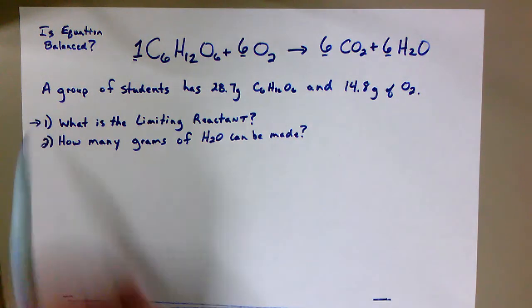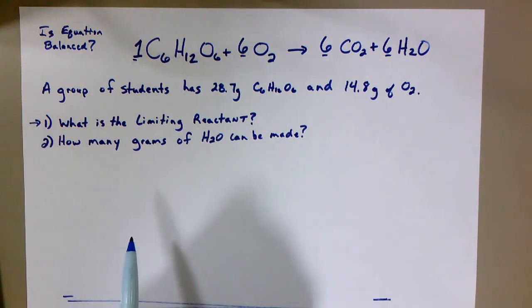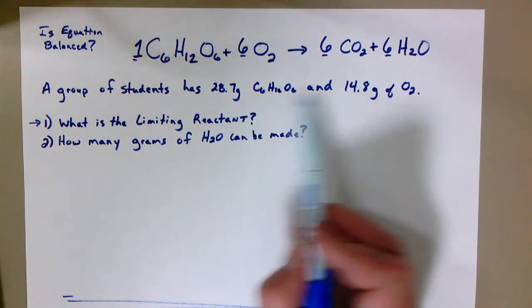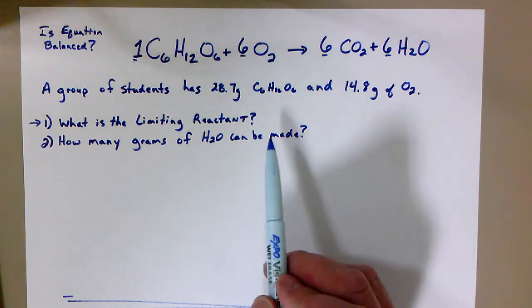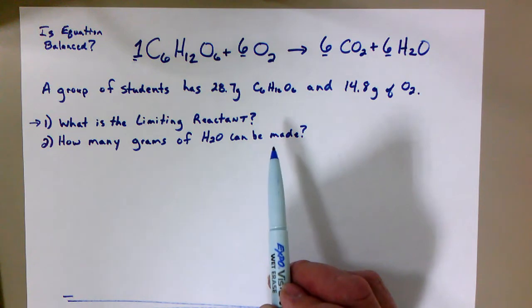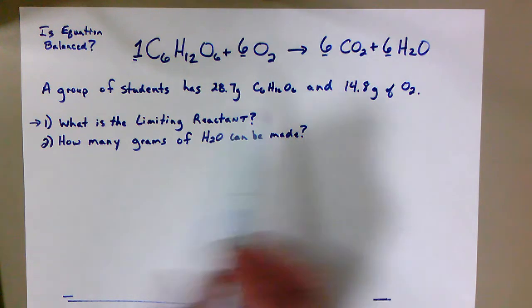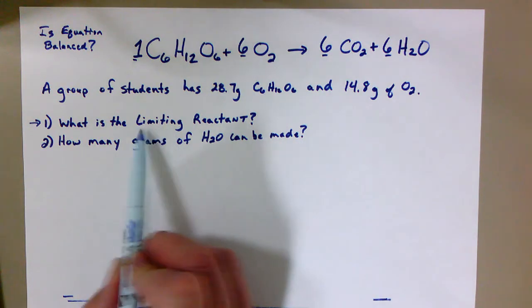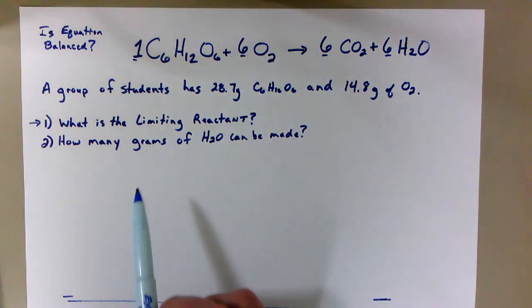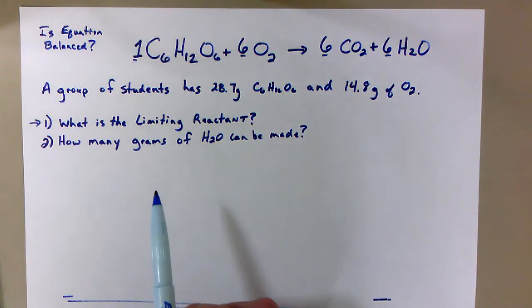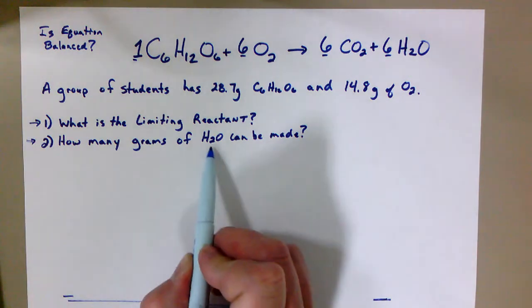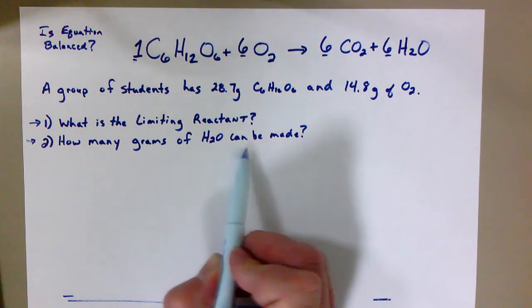So the question is what is the limiting reactant? In other words, which of these two reactants, which of these two ingredients runs out first? And the reason that's important is because whichever ingredient runs out first, that limits how much this reaction can happen, and so that limits how much of our product we can make.